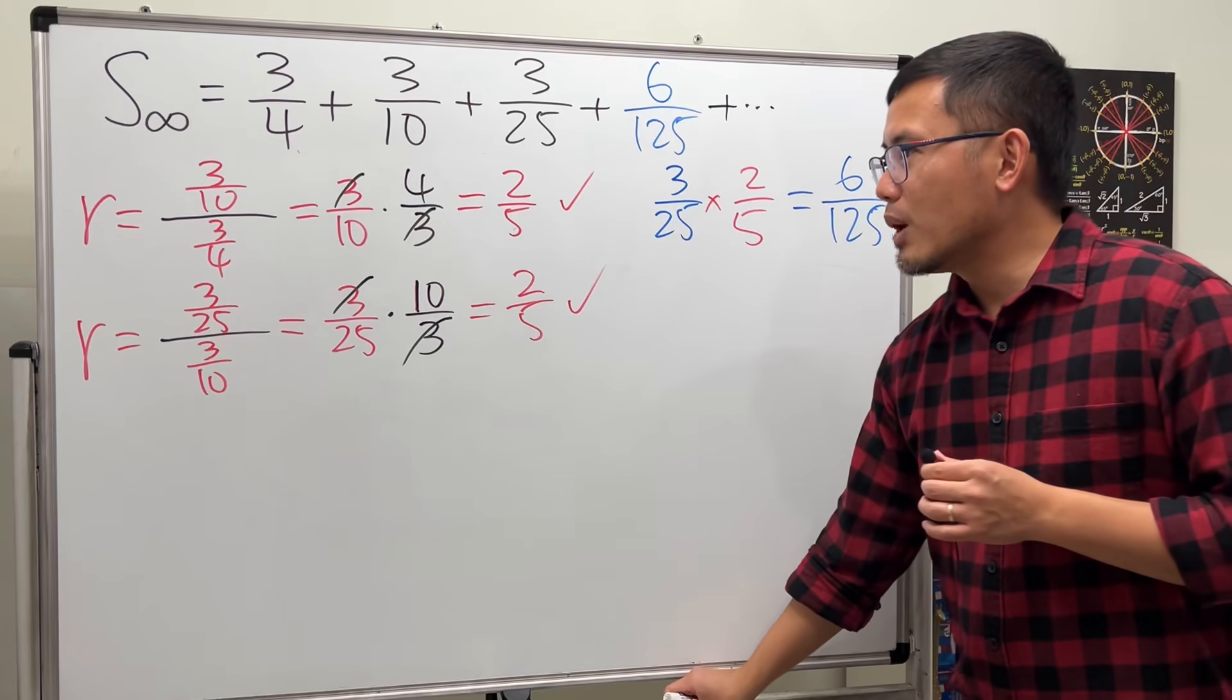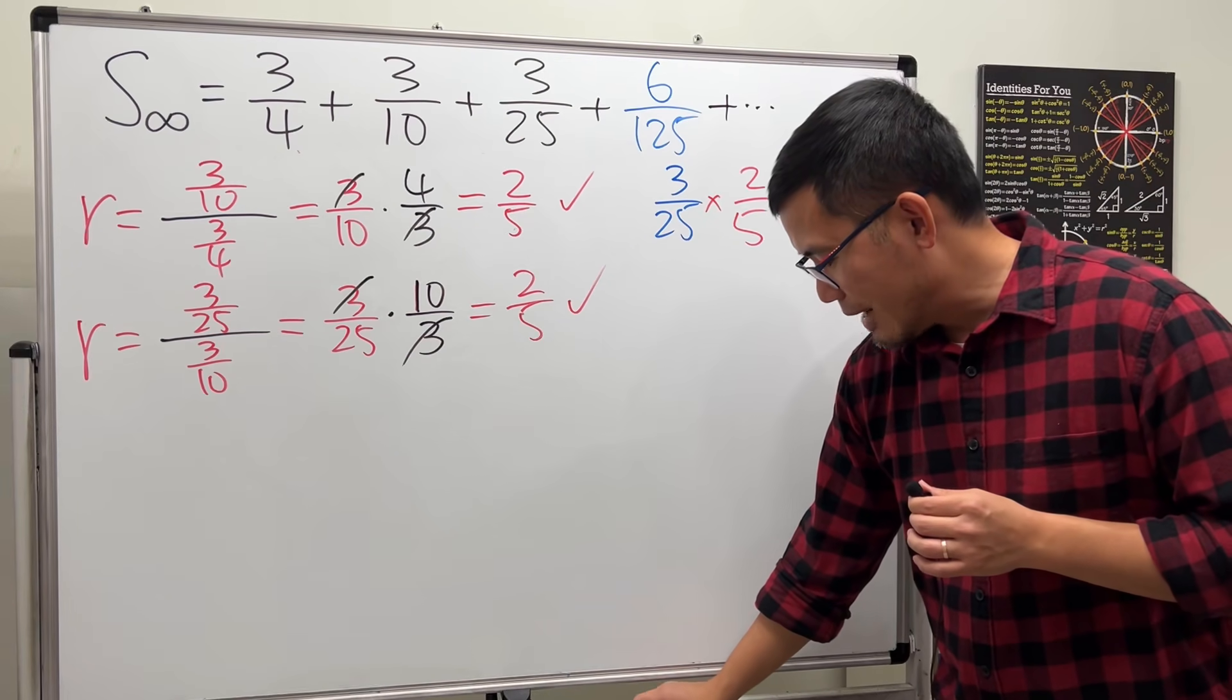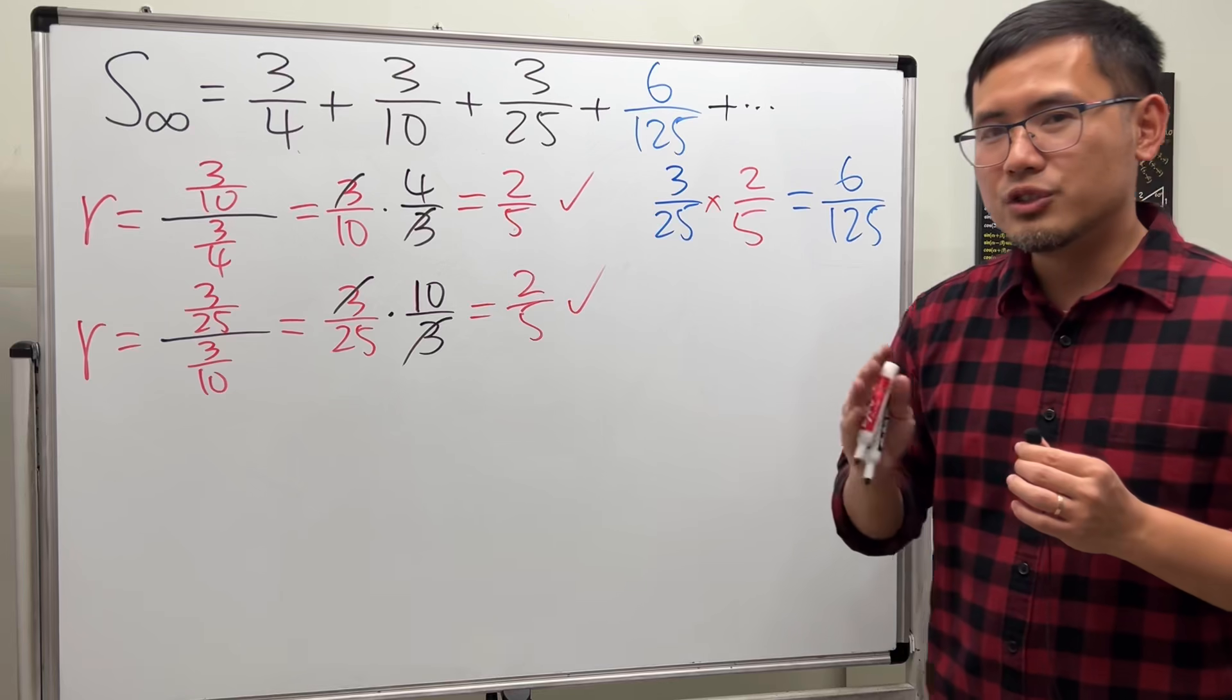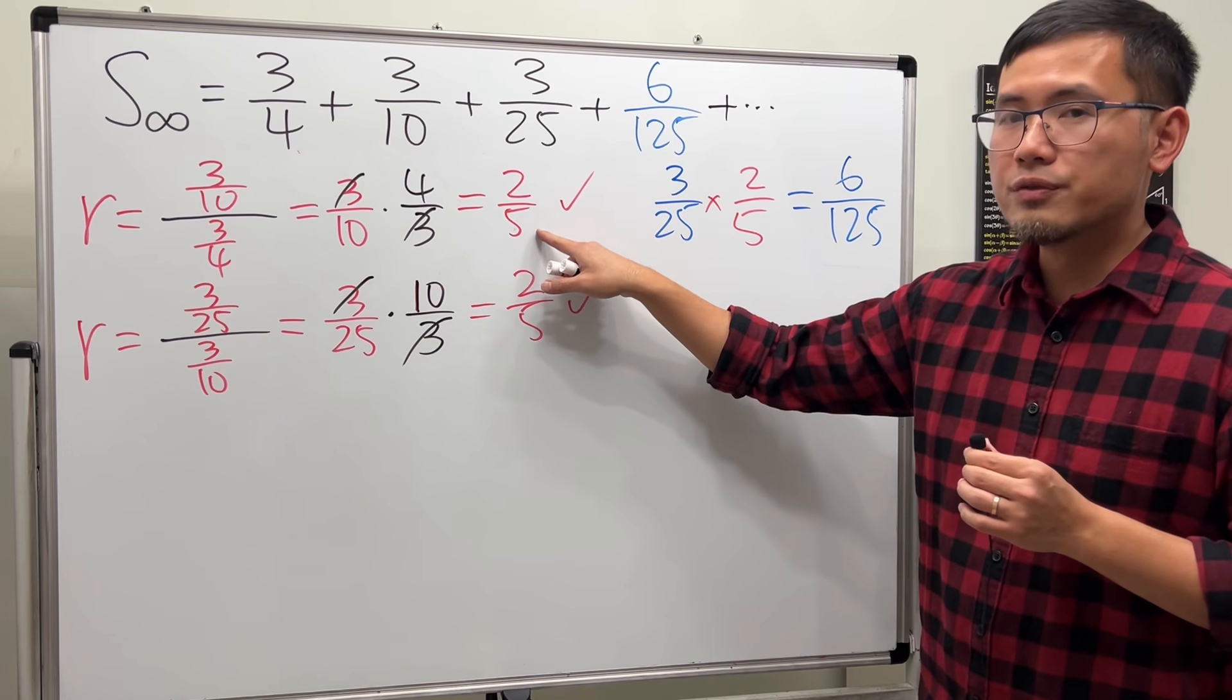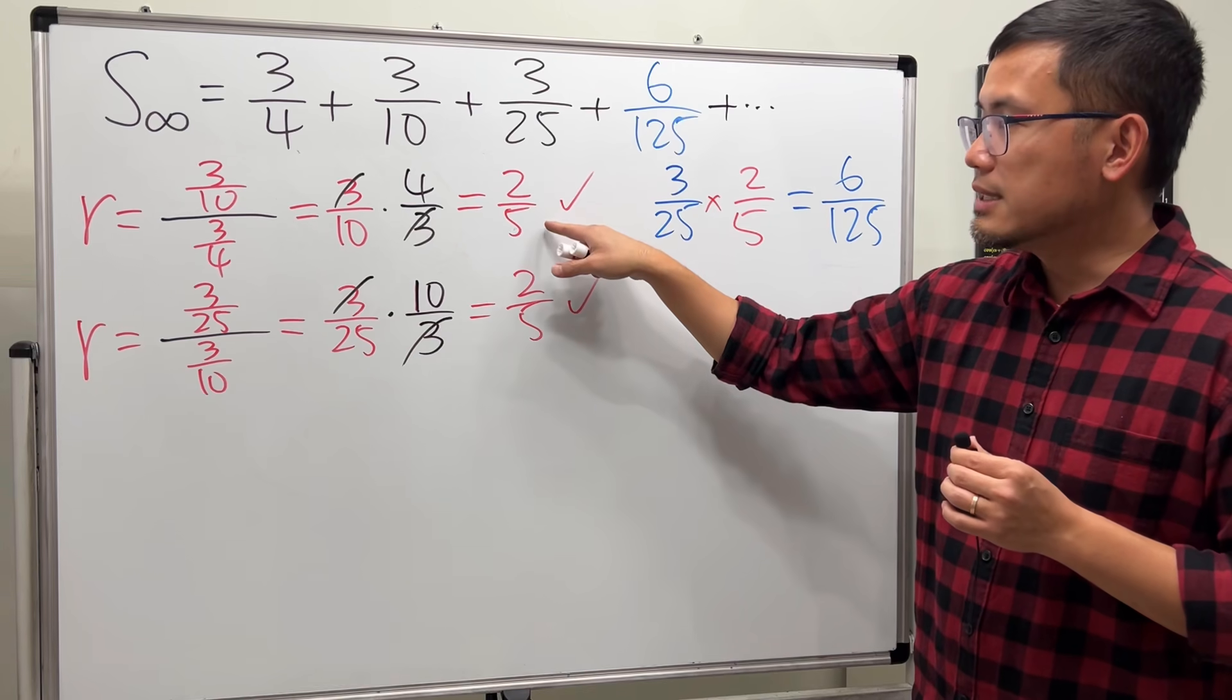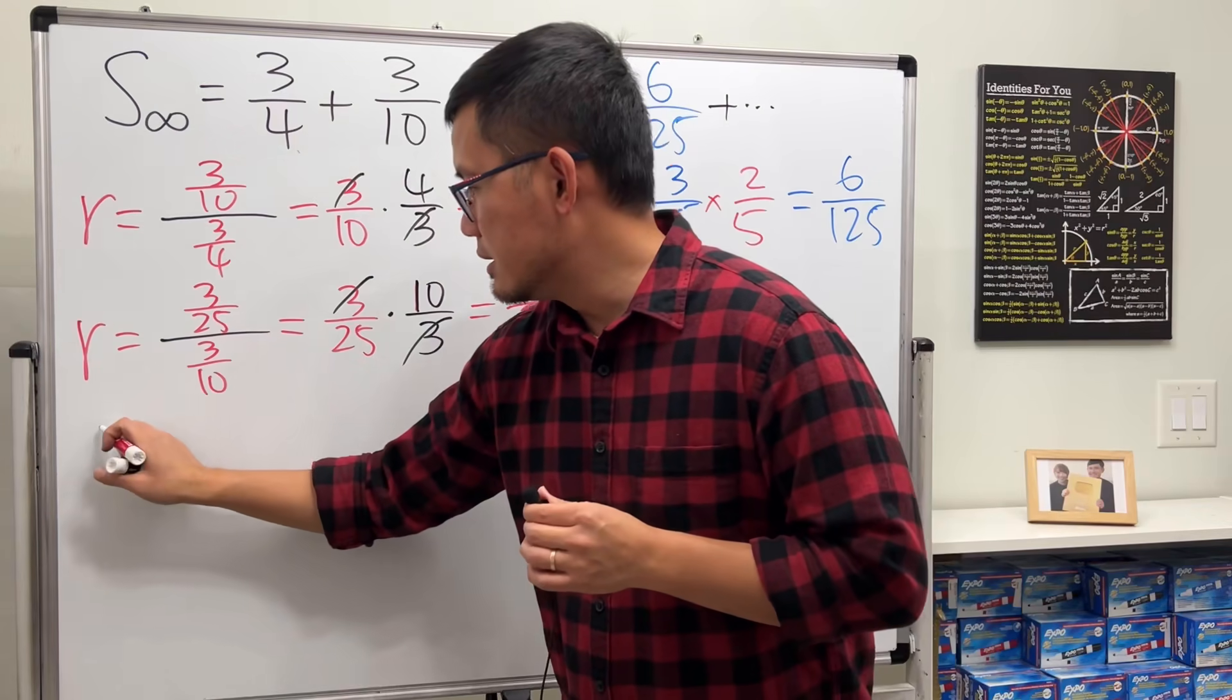So right here, this is what we are going to do. All we have to do for an infinite geometric series is that... notice the absolute value of r is less than 1.